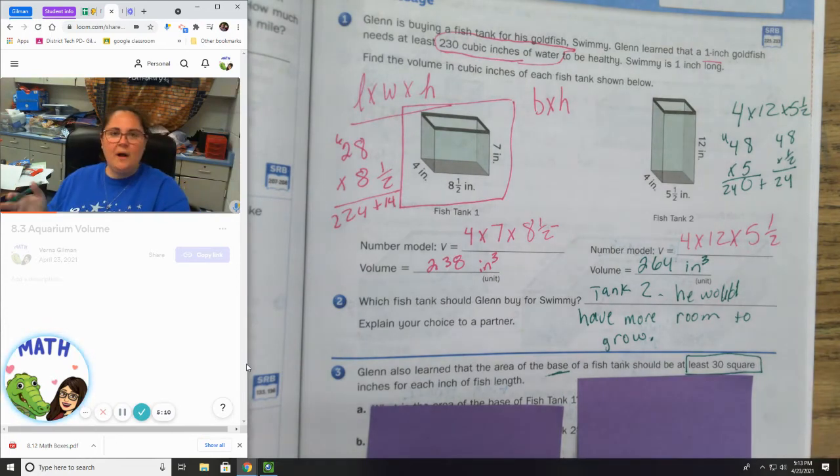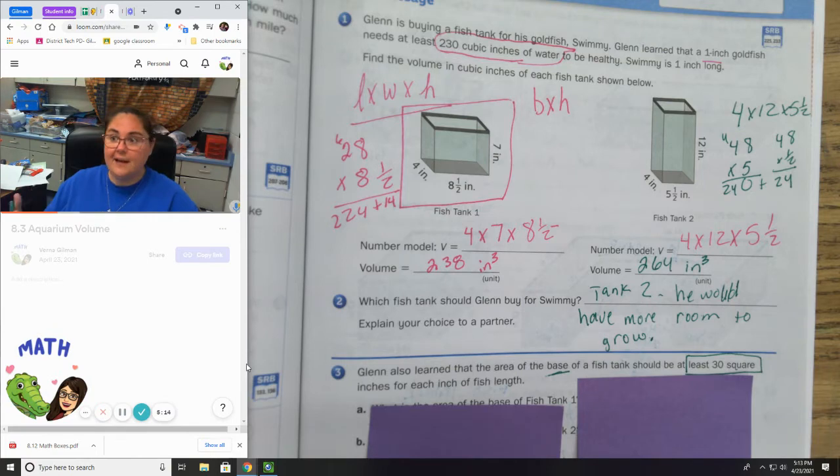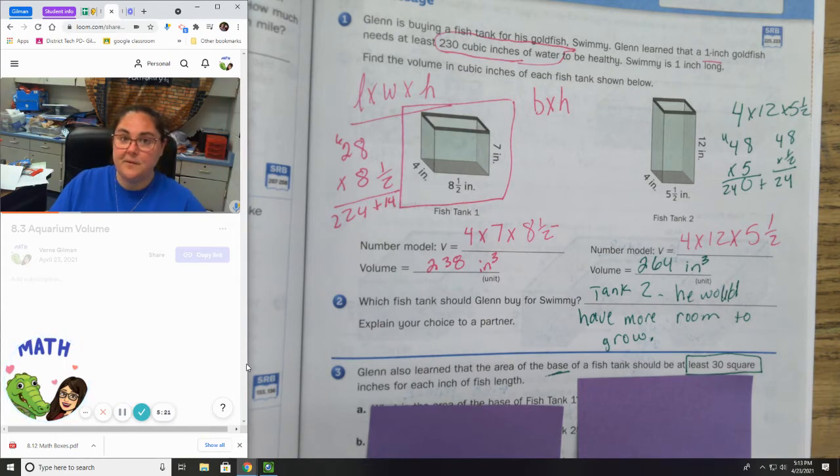He would have more room to grow. Now, if you picked tank one, that's fine. If you have a good reason, great. Again, it does say at least 230. And technically that one still works. Your reasoning is what counts. It has to explain why you chose the one that you did.